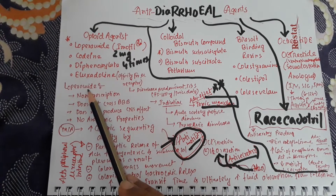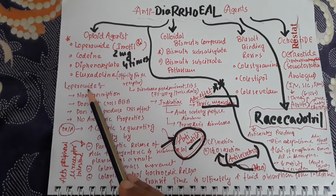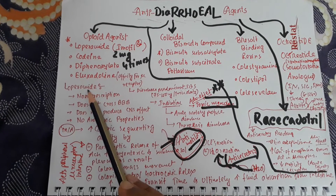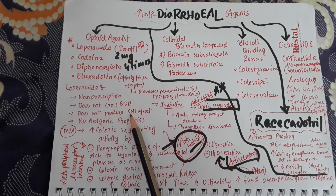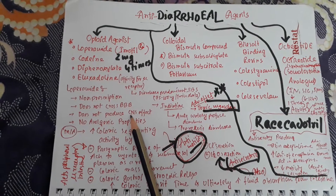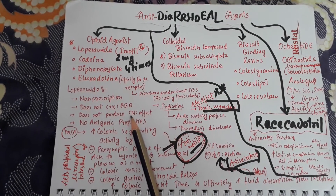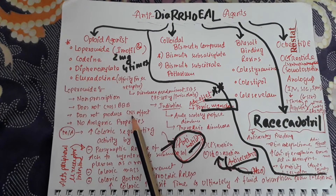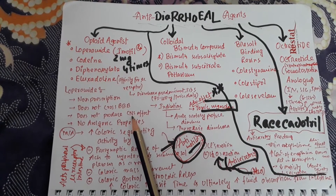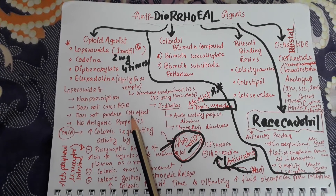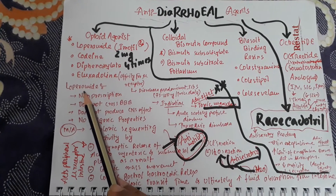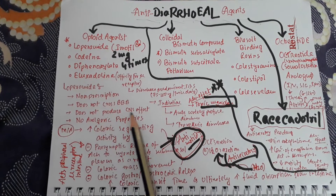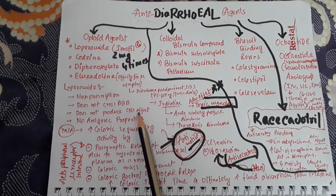Because loperamide is an opioid agonist, it does not cause euphoria, hallucination, delusion, agitation, or depression. Loperamide does not produce central nervous system effects.